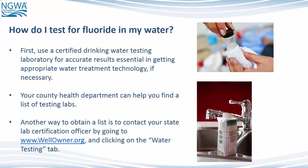How do I test for fluoride in my water? First, use a certified drinking water testing laboratory for accurate results — essential in getting appropriate water treatment technology, if necessary. Your county health department can help you find a list of testing labs. Another way to obtain a list is to contact your state lab certification officer by going to www.wellowner.org and clicking on the water testing tab.